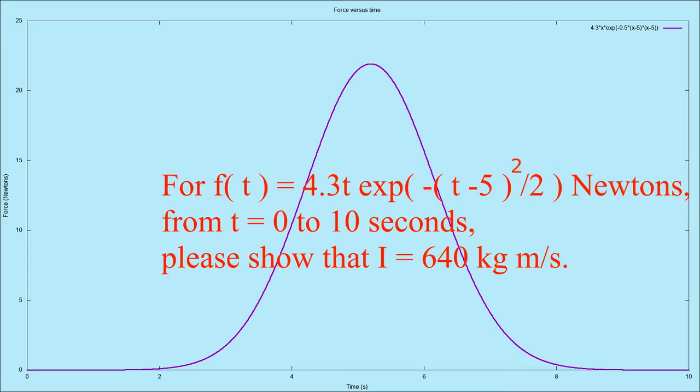Example three. For F of t equals 4.3t e to the minus t minus 5 squared over 2 newtons, from t equals 0 to 10 seconds, please show that I equals 54 kilogram meter per second.